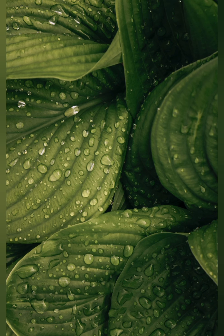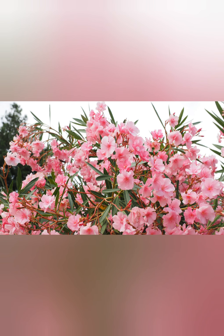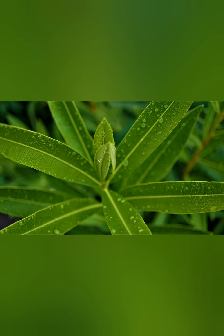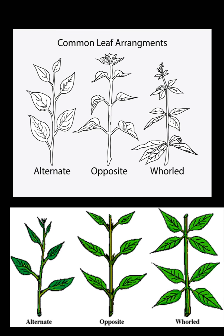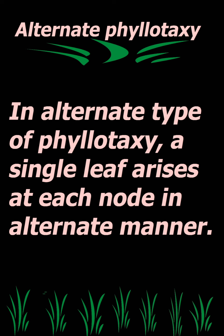In alternate type of phyllotaxy, a single leaf arises at each node in an alternate manner.